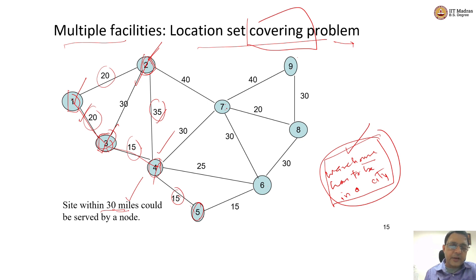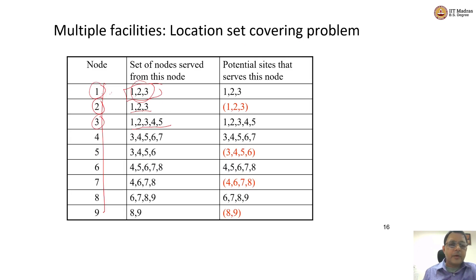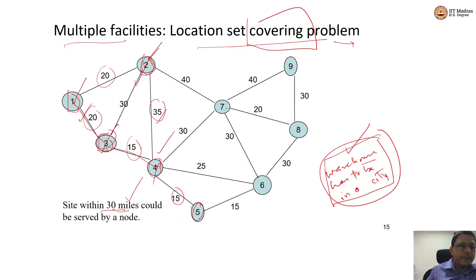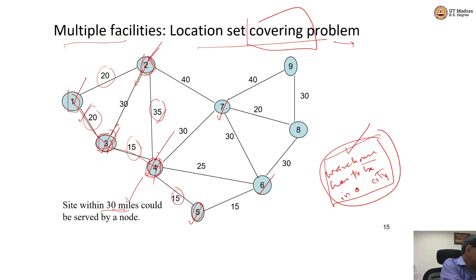Similarly, having a facility at node 4, let us check nodes 3, 4, 5, 6, and 7. Having a facility at node 4 — node 3 yes, node 4 yes, node 5 yes, node 6 yes, and node 7 yes. This is 30 miles, this is 25 miles, this is 15 miles — so yes, nodes 3, 4, 5, 6, and 7 can all be served by having a facility at node 4.